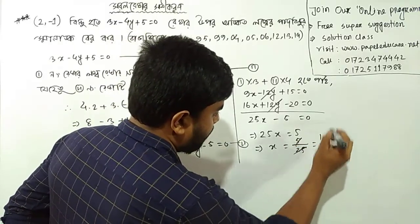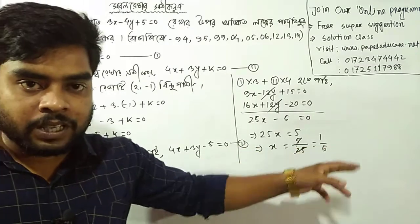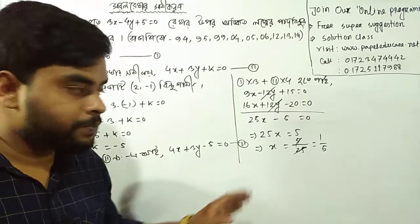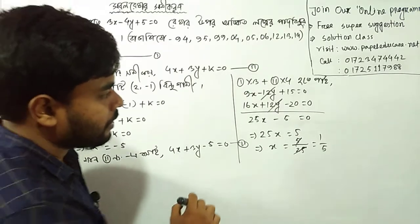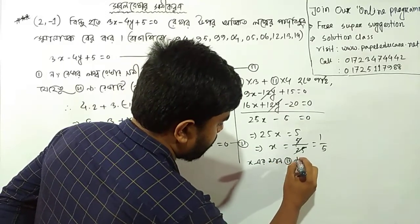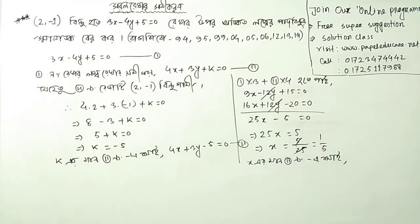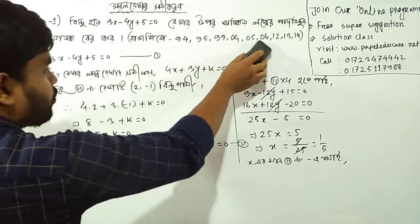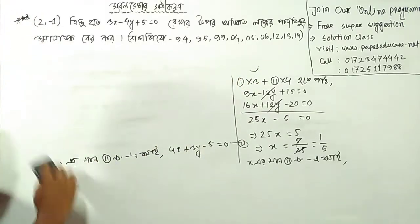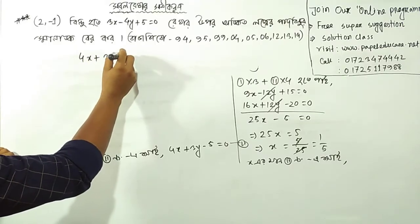1 by 5 is equal to 1 by 5. Now we can use the x value. So x is equal to 2. We will be equal to 2. 4x plus 3y minus 5 is equal to 0.